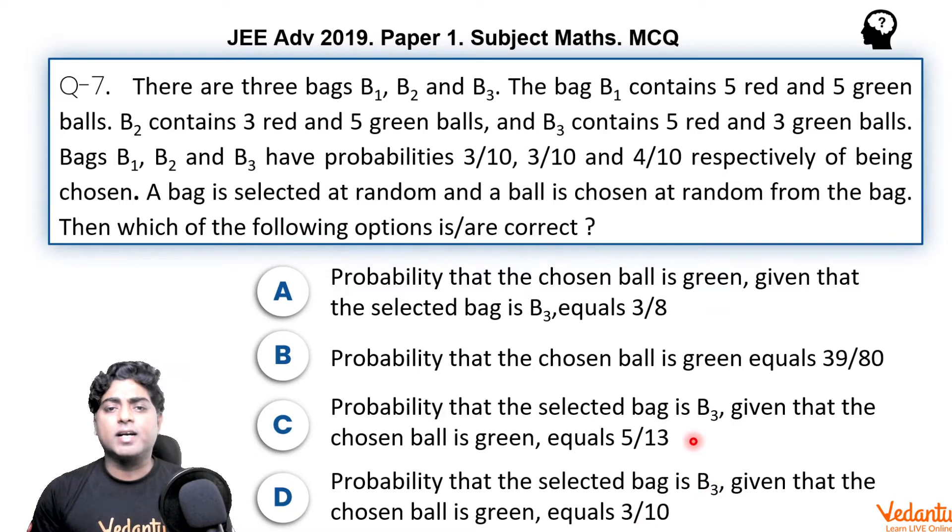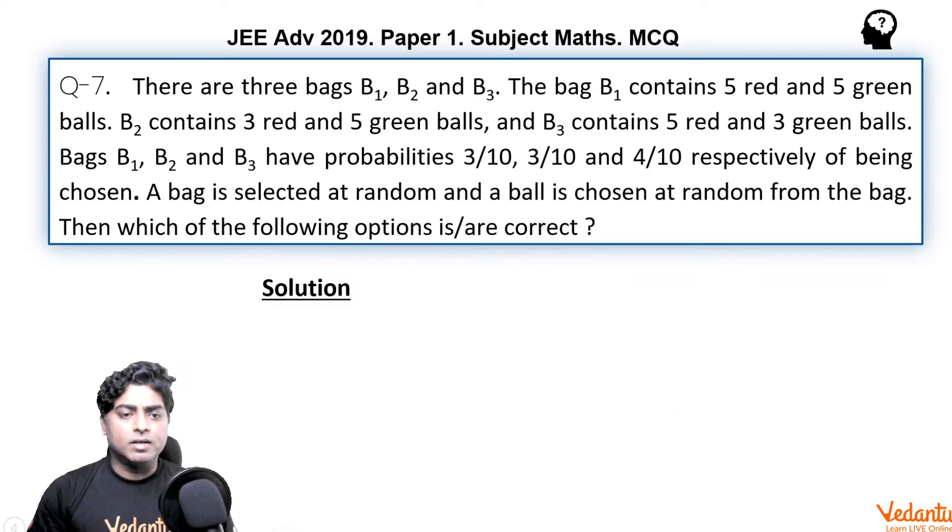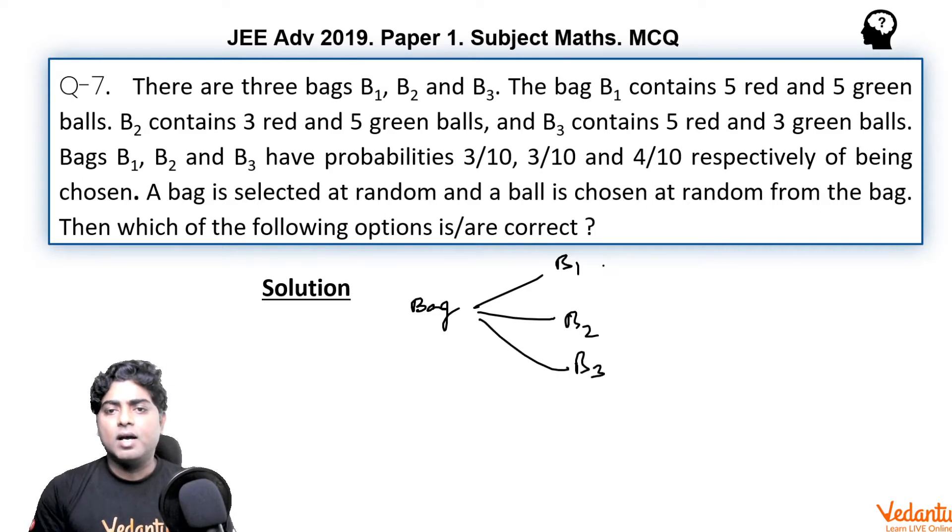If you make a simple tree diagram, let's see how we can find it easily. I would like to make a tree diagram which will show each and every events and sub-events with their probabilities. Bag selected can either be B1 or B2 or B3. And in every option green ball was under consideration. So let's take capital G as the event. I am naming the events B1, B2, B3 and G here.